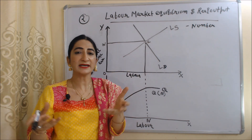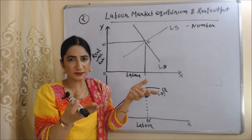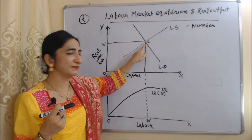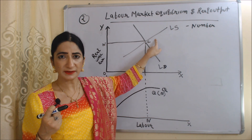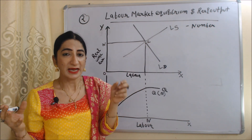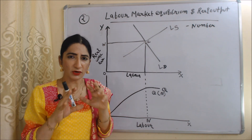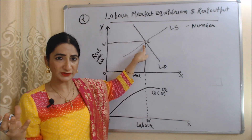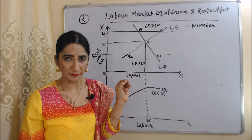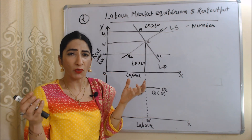LS is the labor supply curve — the number of workers willing to work. Labor supply and wage rate have a positive relation, so the slope of the labor supply curve is upward. At a higher wage rate, more people are willing to work; at a lower wage rate, fewer are willing. E is the equilibrium point where labor demand equals labor supply — this is the full employment point. According to classical economists, the economy is always at point E in the long run.